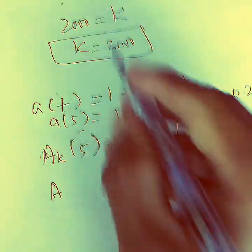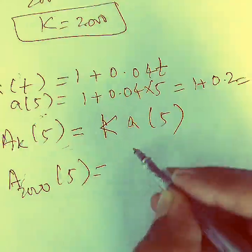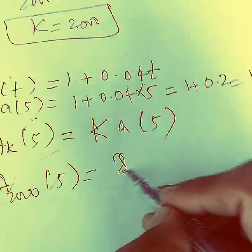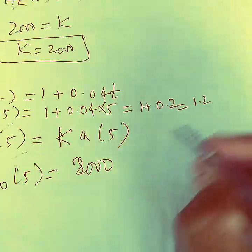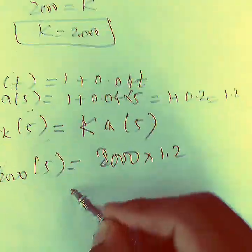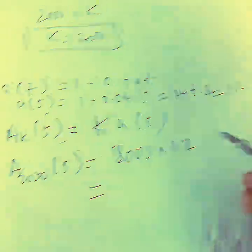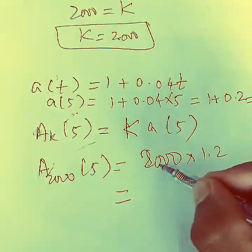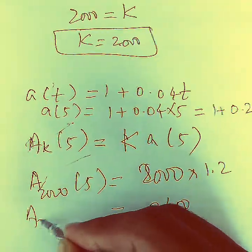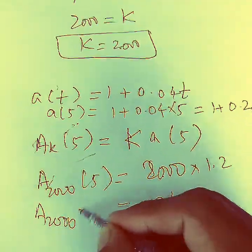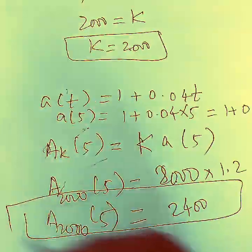So a(5) = 1.2, and therefore a(k, 5) = 1.2 × 2000 = 2400. The amount at time 5 is $2400.